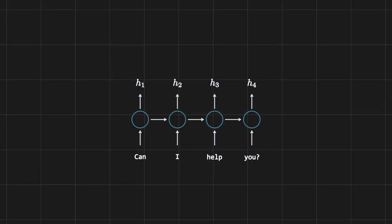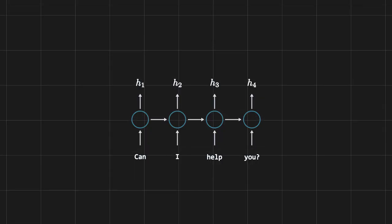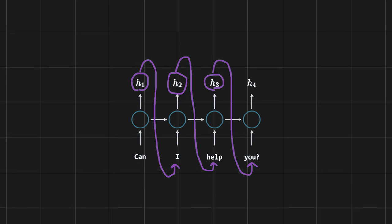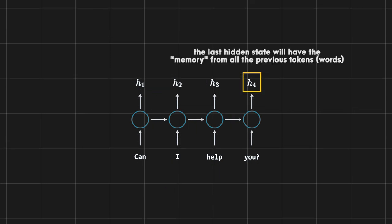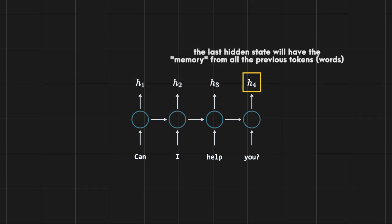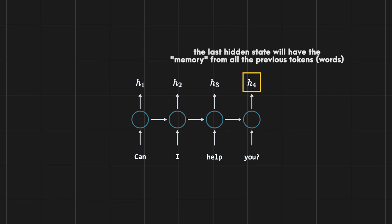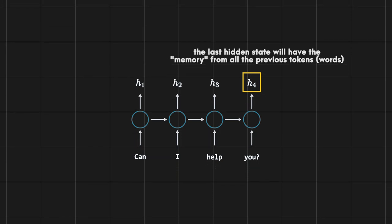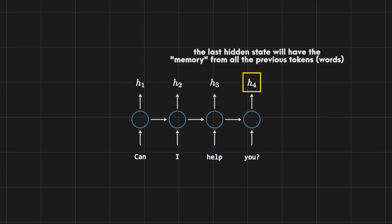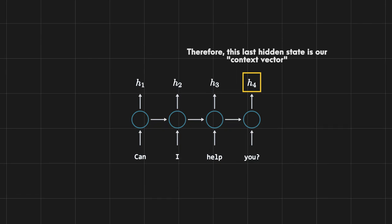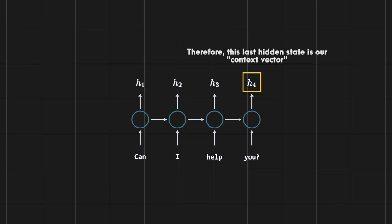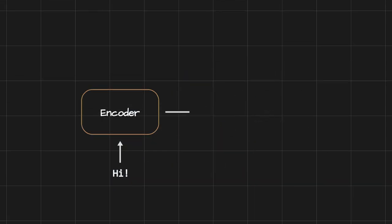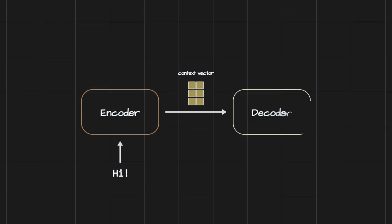From a higher level, the RNN outputs a hidden state at every time step. The last hidden state will have the memory of all previous tokens — this is how RNNs deal with temporal data where order matters. Therefore, this last hidden state is our context vector, as shown in the high-level diagram.